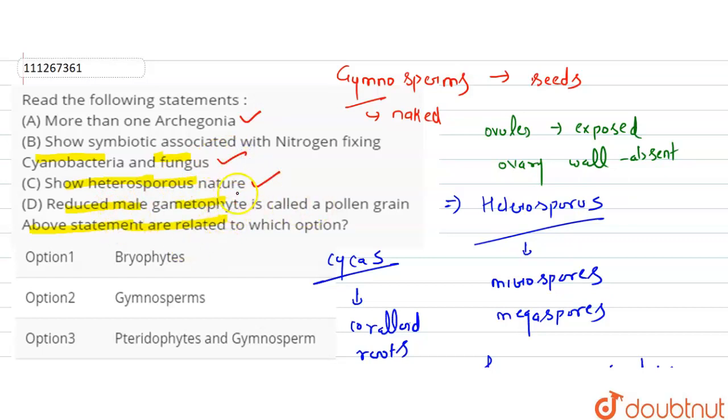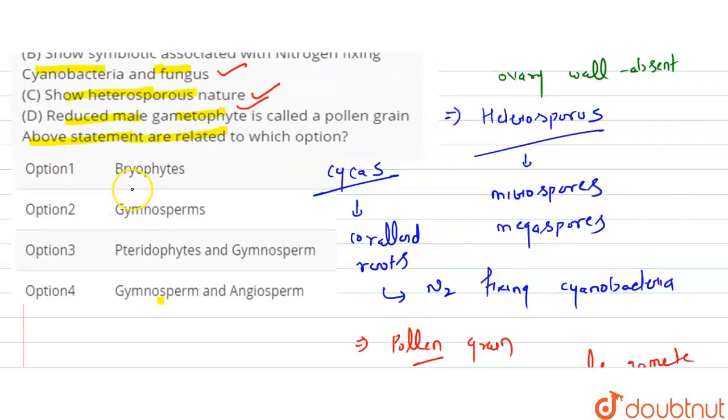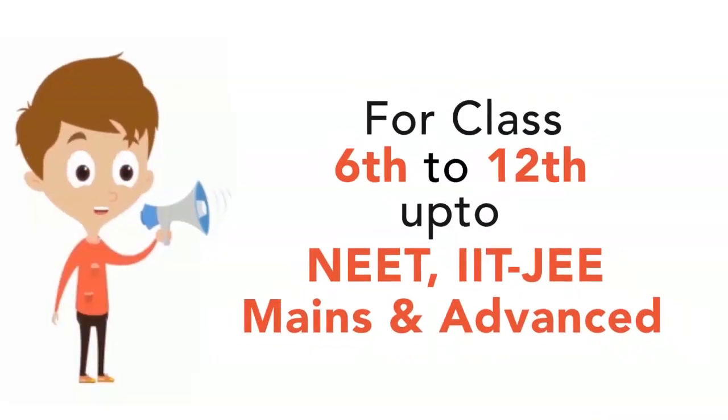So first we have given bryophytes. Bryophytes will not be associated with nitrogen fixing bacteria. The second option is gymnosperms, which is correct. Third option is pteridophytes. Pteridophytes can also be homosporous and heterosporous. Then angiosperms. So the correct option is the second option, gymnosperms.